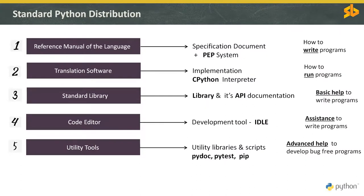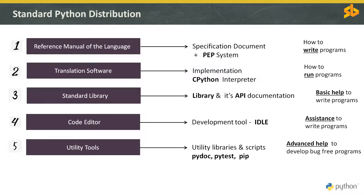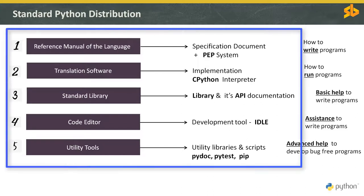It's called a distribution because along with the standard Python interpreter implementation — also called CPython because it's written in C language — it is bundled with a bunch of other things packaged together and distributed for us to use. A distribution is more than just a simple Python interpreter; it's a package or a bundle.